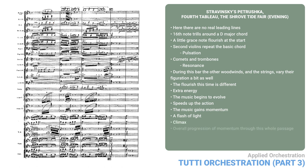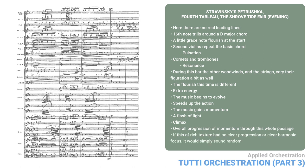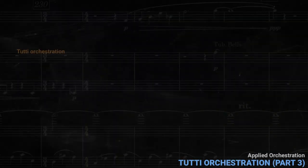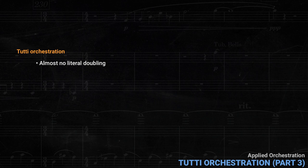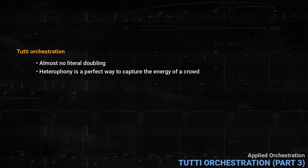So here too, there's been an overall progression of momentum through the whole passage, even though it's all built just around the D major chord. Again, if this rich texture had no progression or clear harmonic focus, it would just sound random. One aspect of this kind of orchestral texture is that there's almost no literal doubling. Even when lines have the same general contour as others happening at the same time, the details are often different. This kind of heterophony is a perfect way to capture the energy of a crowd, moving as a whole in one direction, but with no two people precisely synchronized.